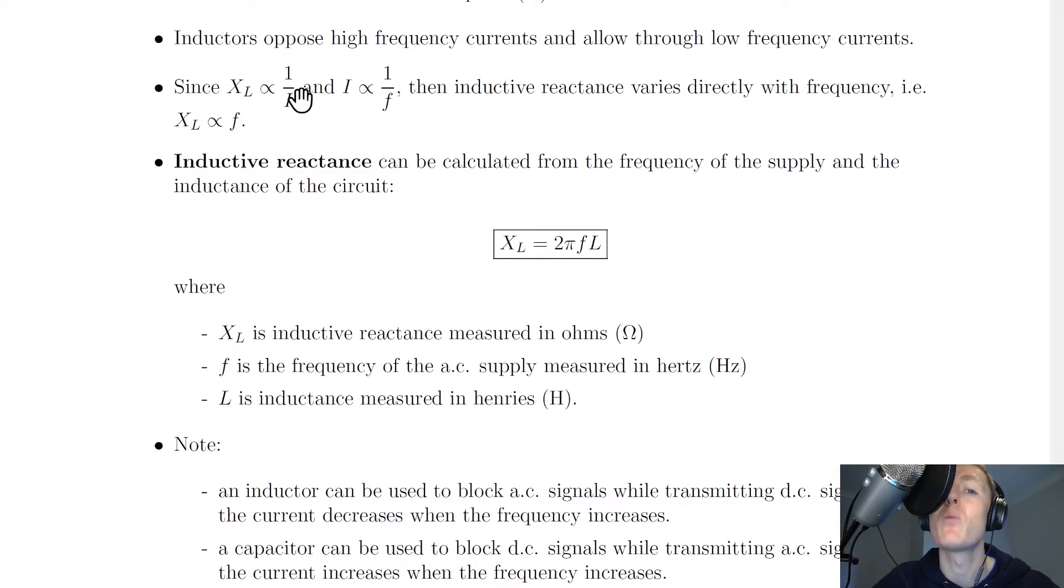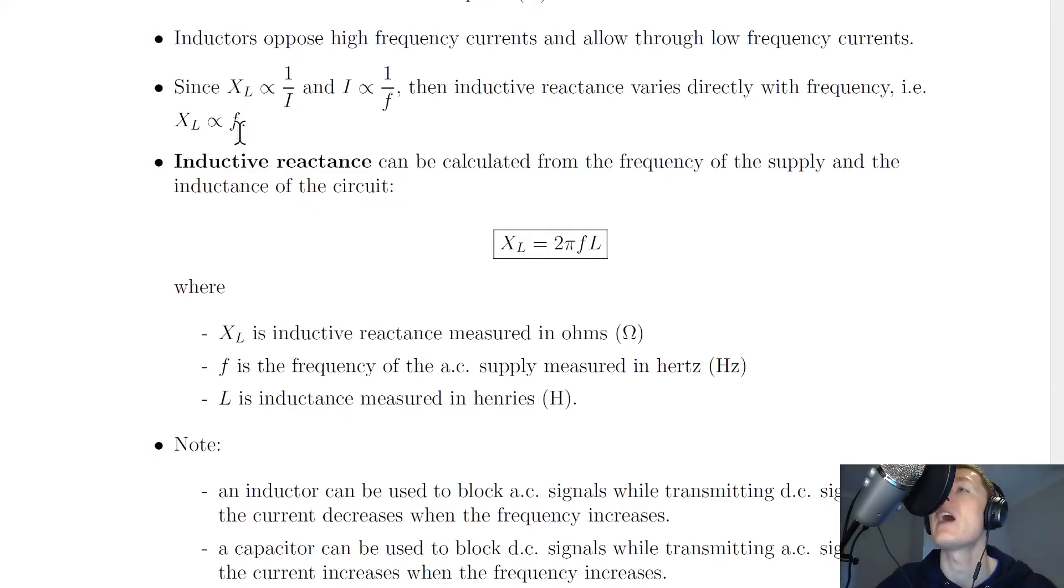Then that means we can replace the current I here with 1 over the frequency, which gives us 1 divided by 1 divided by frequency. And you might remember from maths that 1 divided by 1 divided by something is the same as bringing that lower term up to the top. So this would be the same as XL is proportional to F. So we can say that inductive reactance XL varies directly with the frequency F, and we can actually expand this into an equation.